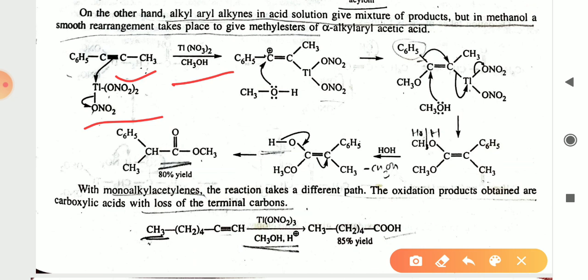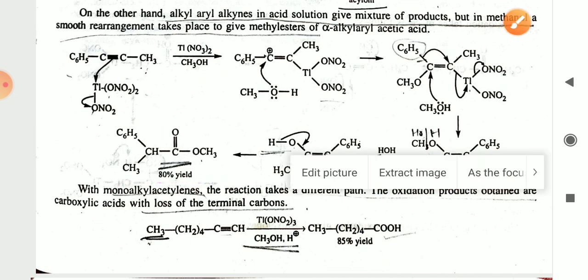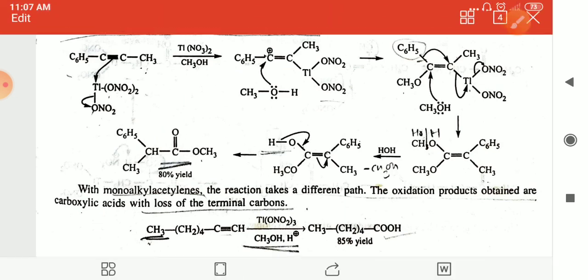The triple bond is converted into a carbon–carbon double bond (alkene). One more equivalent of methanol reacts with the double bond to give CH3O–CH(OCH3)–C6H5–CH3. After hydrolysis of this product you get the alpha-allyl aryl acetic acid with a final yield of 80%.